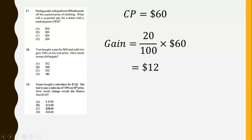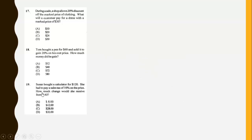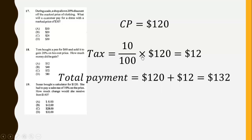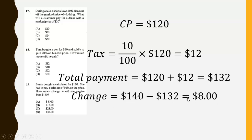Susan bought a calculator for $120 and had to pay a sales tax of 10% on the price. How much change would she receive from $140? The tax is 10% of $120, which gives $12. The total payment equals $132. If she has $140, she will get change of $8, so the answer is A.